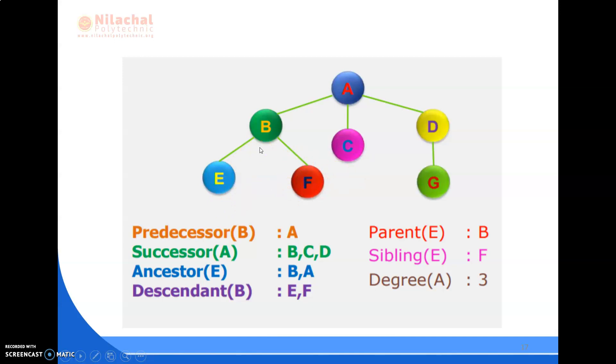The parent of E is B. The sibling of E is F. The degree of the tree from the top to the leaf node — counting all edges on the longest path — is 3, and the degree is also 3.